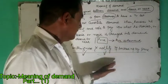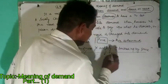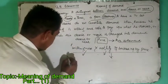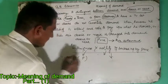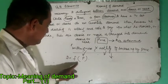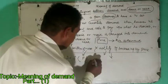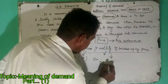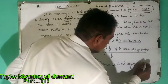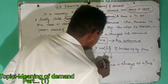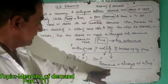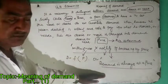We can write this in an equation. D is a function of P. Therefore, we can say that D is a function of P. Demand is always at a price. This is the sentence which defines what we call demand.